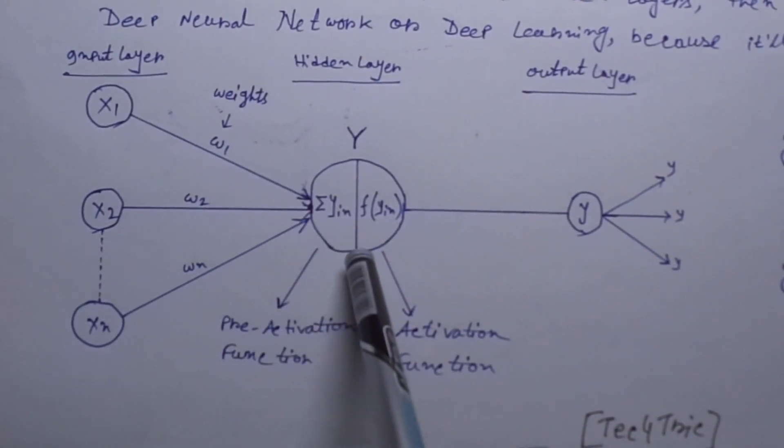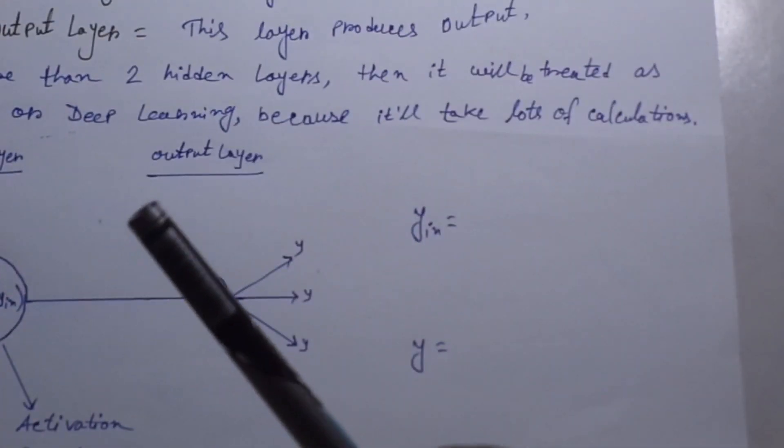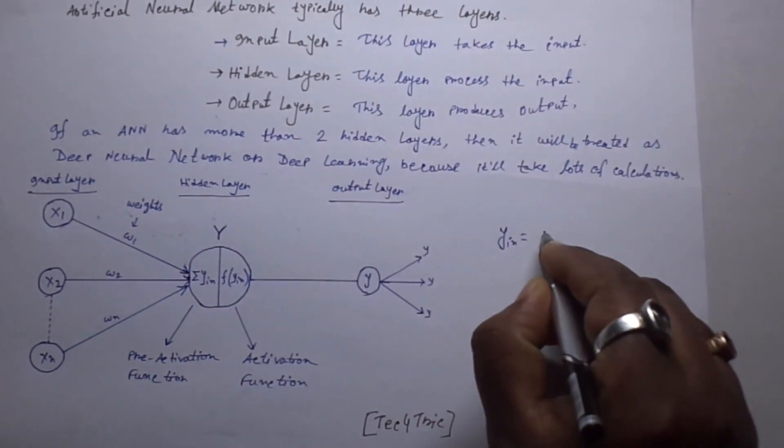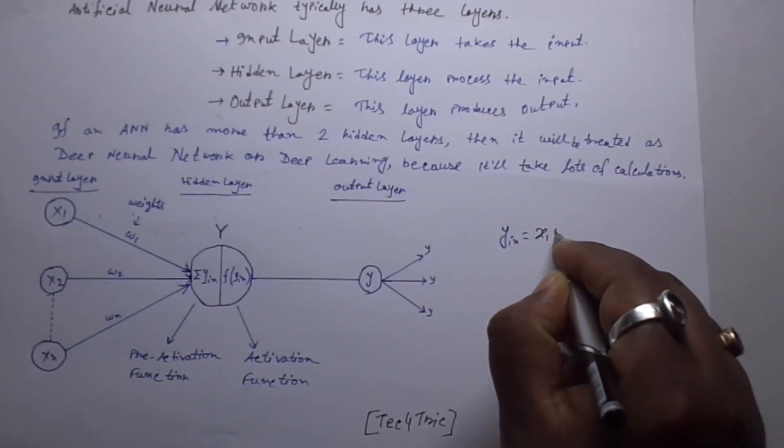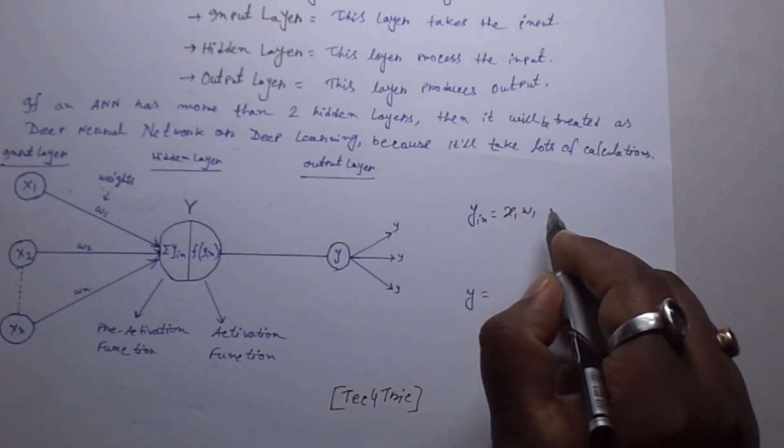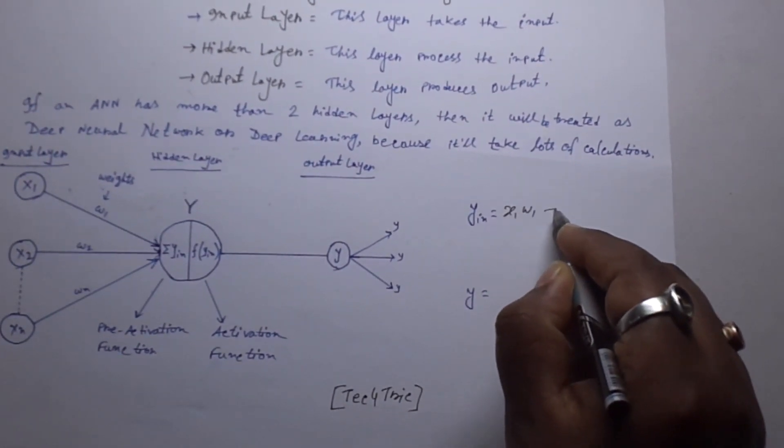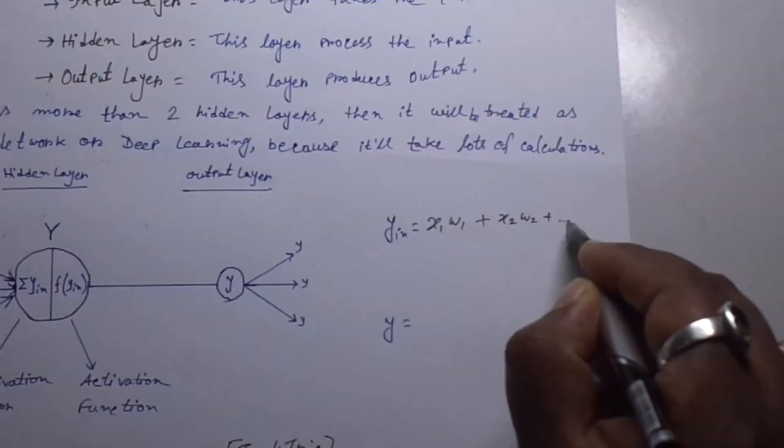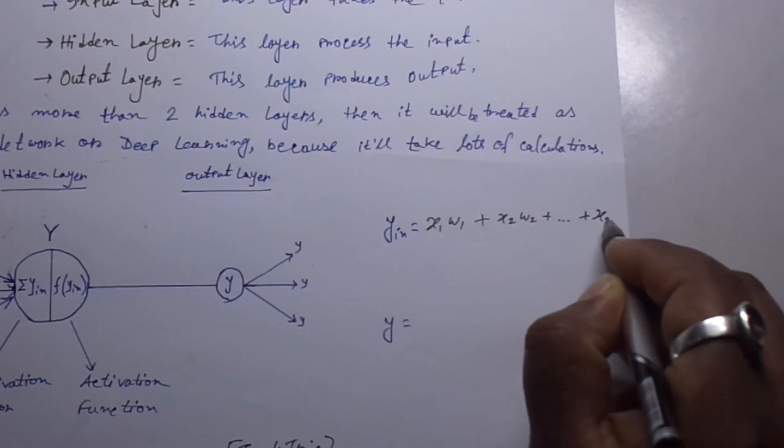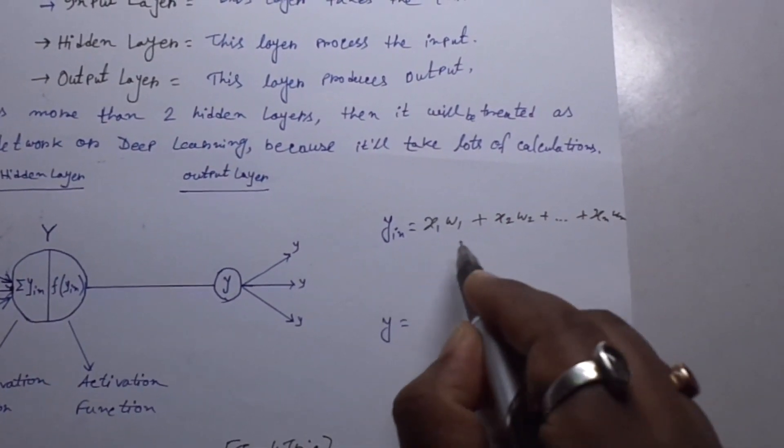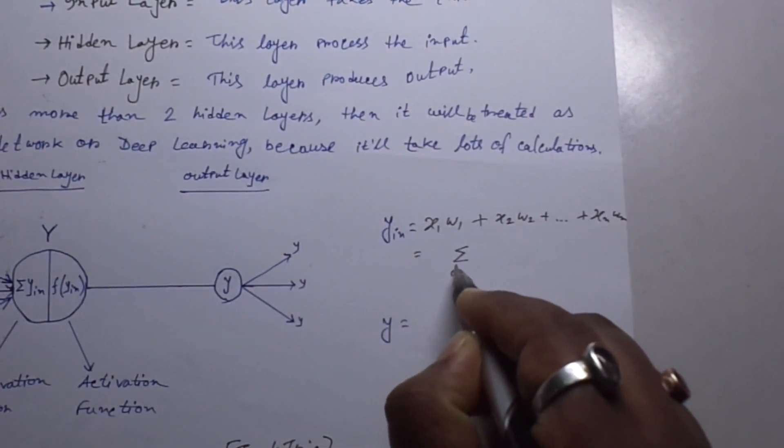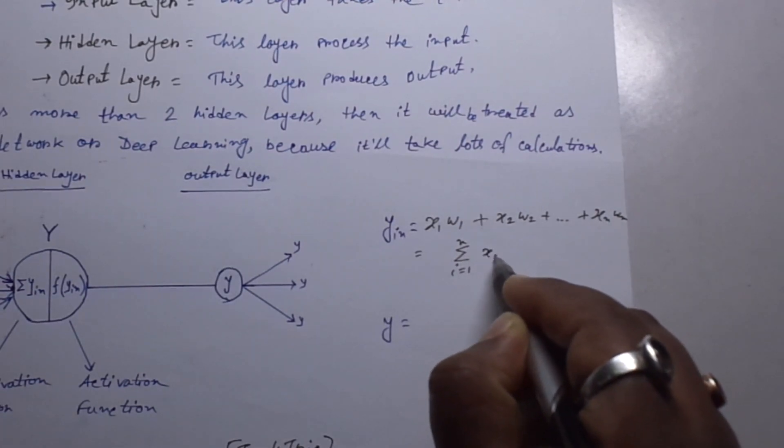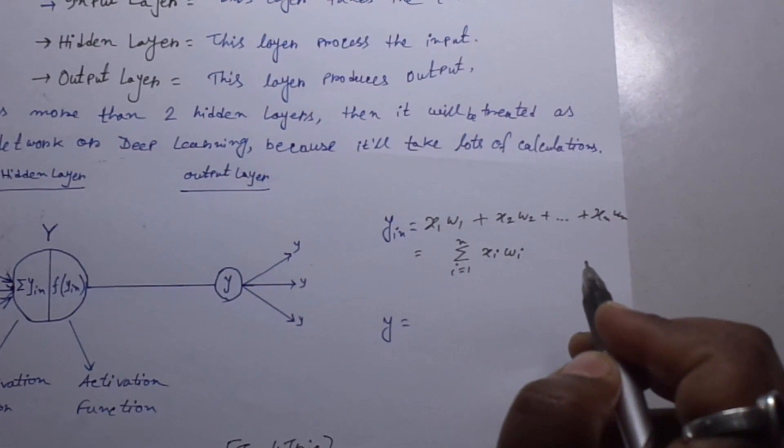So how to calculate this y_in. Let's see. So we have inputs x1, w1, x2, w2. So x1*w1 plus x2*w2 plus xn*wn. So this is the formula of summation i equals 1 to n, x_i times w_i.